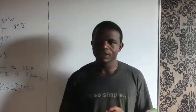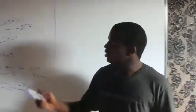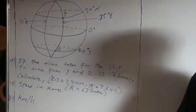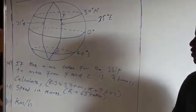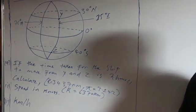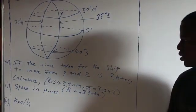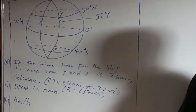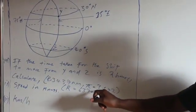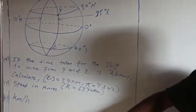Here is an example with two points, Y and Z. Point Y is on latitude 30 degrees north and longitude 15 degrees east. Point Z is on latitude 40 degrees south and longitude 15 degrees east. The time taken for the ship to move from point Y to Z is two hours. Calculate: (1) the speed in knots, and (2) the speed in kilometers per hour. The radius is given as 3437 nautical miles, pi is 3.142, and the radius in kilometers is 6370 km.